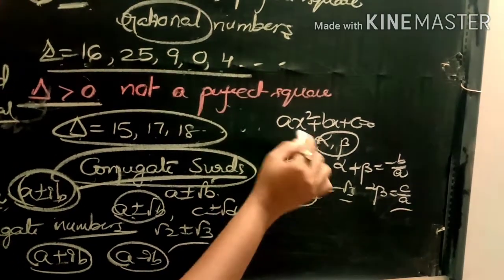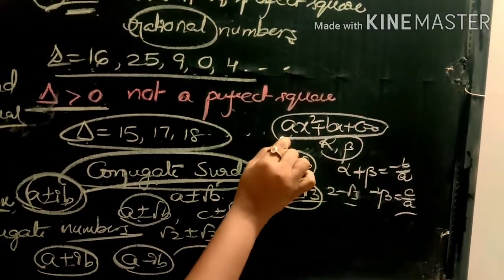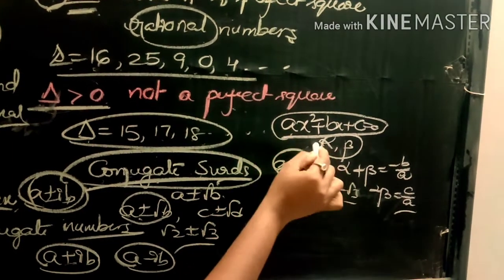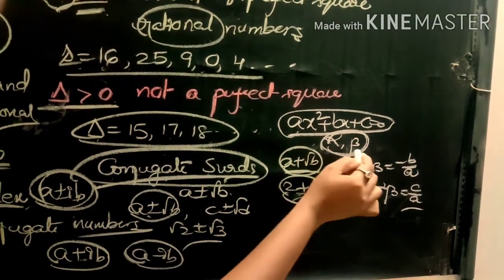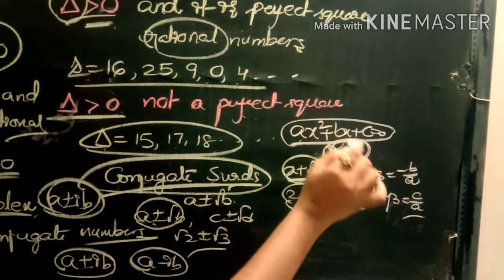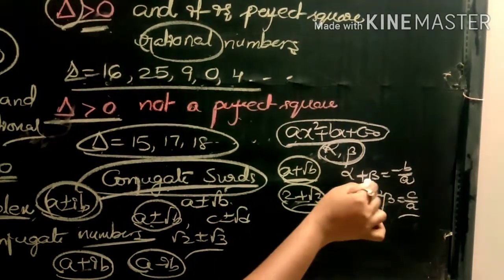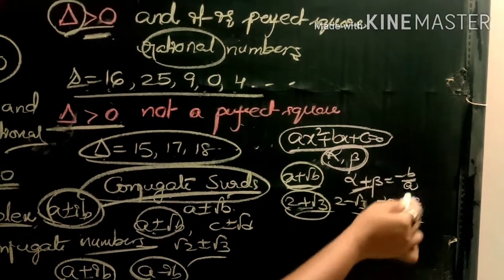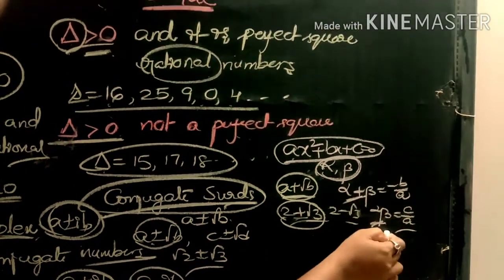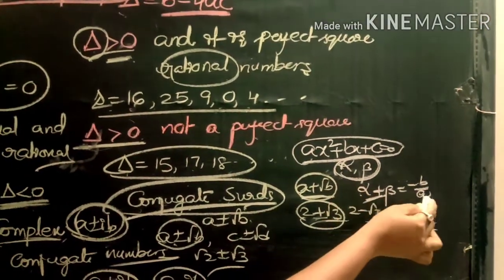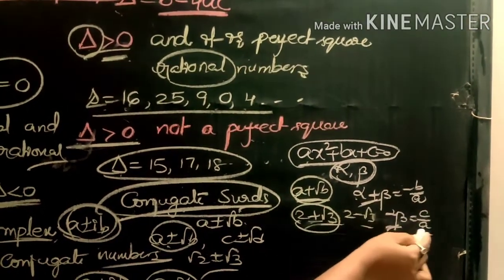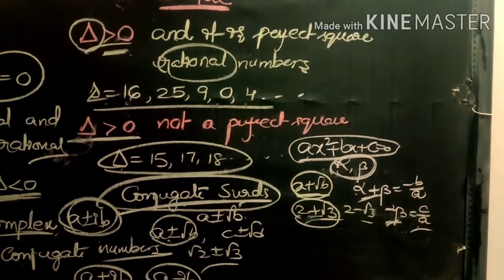If ax² + bx + c = 0 is the quadratic equation and alpha, beta are its roots, then the sum of the roots: α + β = −b/a, and the product of the roots: α·β = c/a.